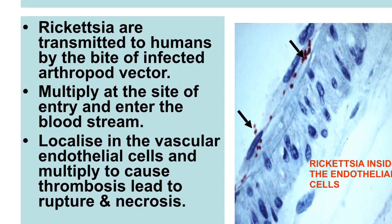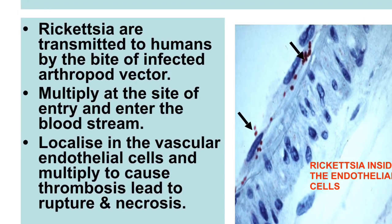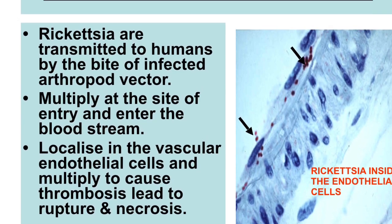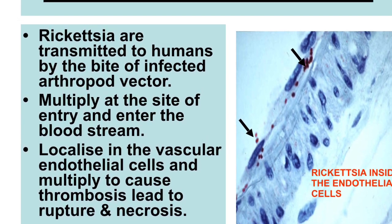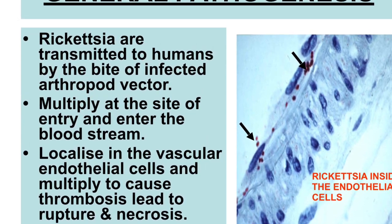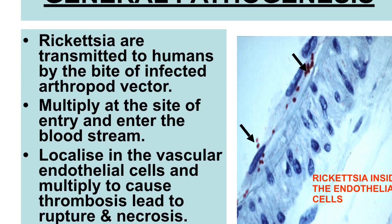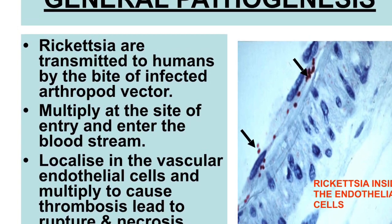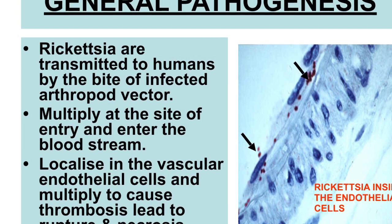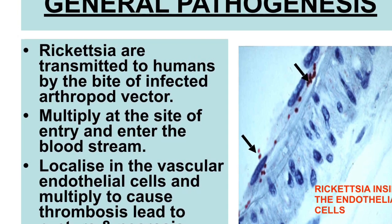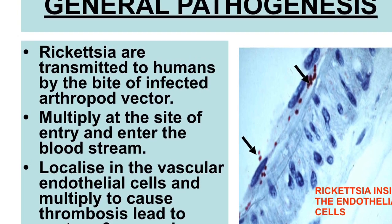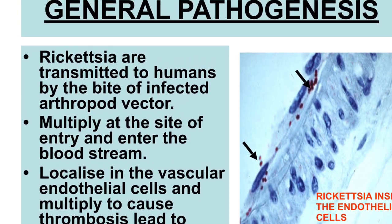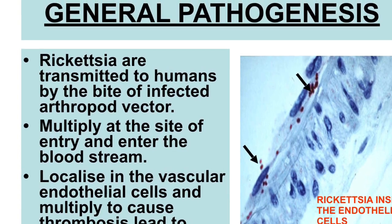Consequently, blood begins to leak out into the adjacent tissues, which may lead to a rash seen in the clinical picture, and further damage to organs and tissues. This blood leaking out leads to activation of the coagulation cascade, which then causes thrombosis and thrombocytopenia.